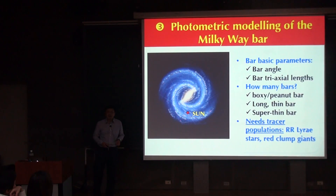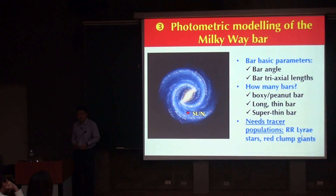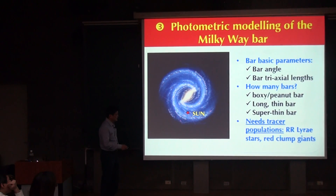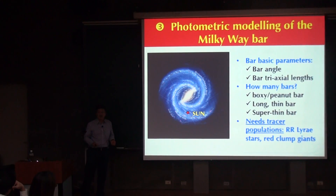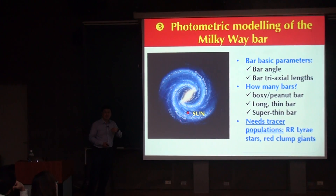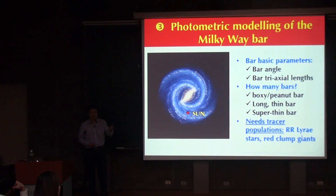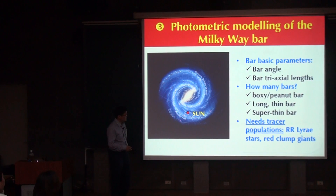To address these questions, we need so-called tracer populations of stars. In the astronomical community, we have RC stars or red clump giants. These stars are supposed to be more or less standard candles — they have more or less the same luminosity. So from their observed brightness, we can infer their distances: for the same luminosity, if something is further away it will appear fainter, so we can infer distances from observed fluxes.